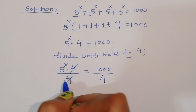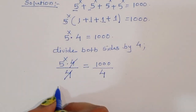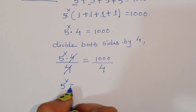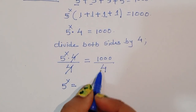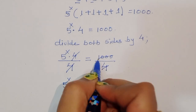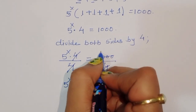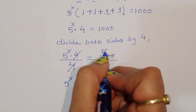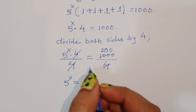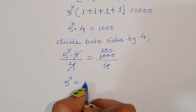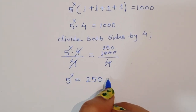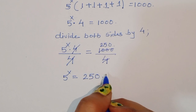Then we will get 5 power x times 4 divided by 4 is equal to 1000 divided by 4. This will cancel, so 5 power x is equal to 250.